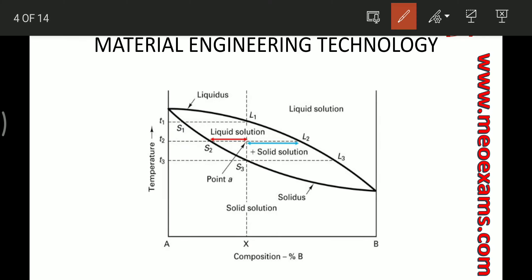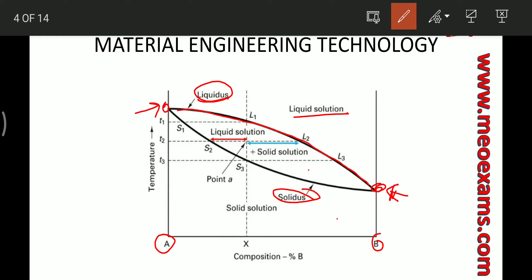Now let's see what information we get from the phase diagram. The first and most important information is the melting points of the components A and B. There is also a liquidus line, which separates the liquid plus solid solution from the liquid solution, and a solidus line, which separates the solid solution from the liquid plus solid solution region.